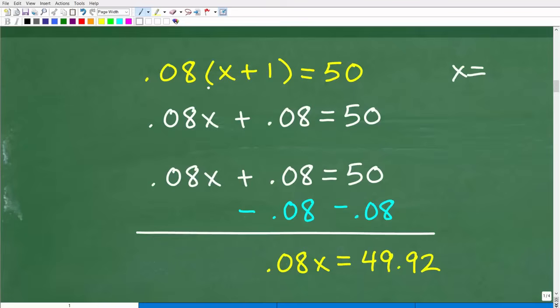So here we have 0.08 times X plus one is equal to 50. We're focusing in on what X is equal to. So we need to solve this equation for X. So the first thing we need to do is to do the distributive property. We have a number outside of a sum or difference where the variable's at. So we're going to take this 0.08, multiply it by X, we're going to get 0.08 X, but we also need to take this 0.08 and multiply it by one. 0.08 times one, of course, is 0.08. So 0.08 X plus 0.08 is equal to 50.